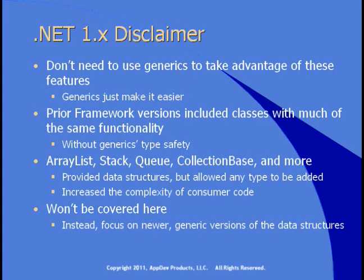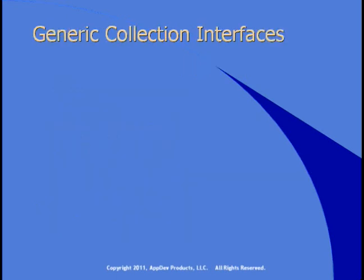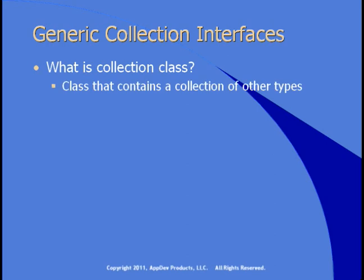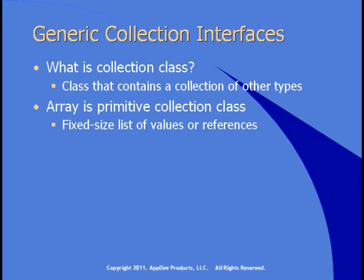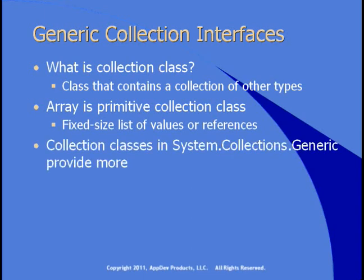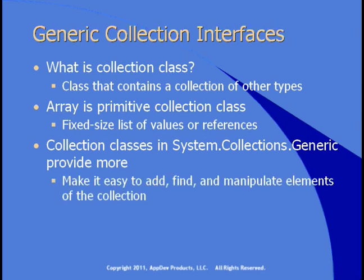Instead, we'll focus on newer, generic versions of these data structures. When I use 'generic,' I don't mean more generalized — I mean specific versions which are built to handle generics. A collection class is a class that contains a collection of other types. An array is a primitive collection class — a fixed-sized list of values or references. The collection classes in System.Collections.Generic provide much more, making it easy to add, find, and manipulate elements of the collection.